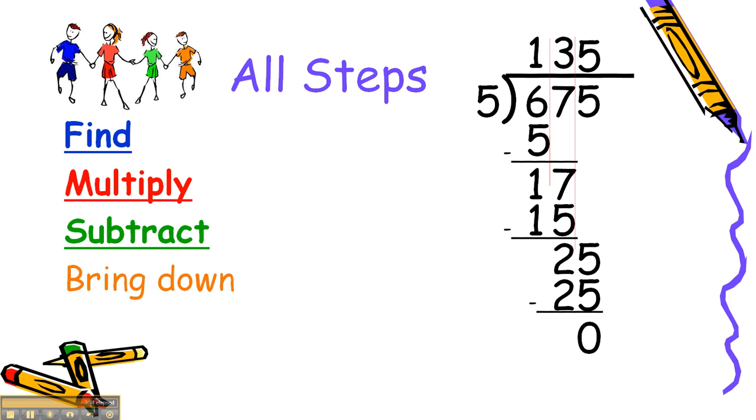The last step is bring down. Since this is our last column and 0 was our answer and we have no other digits to bring down, our answer is 135.